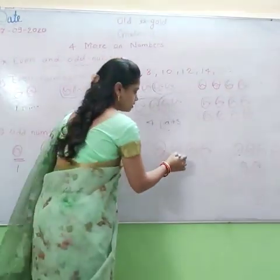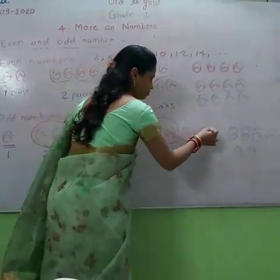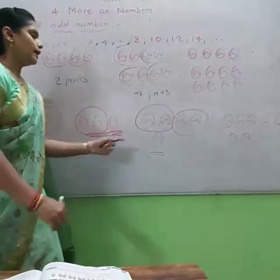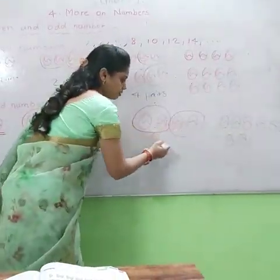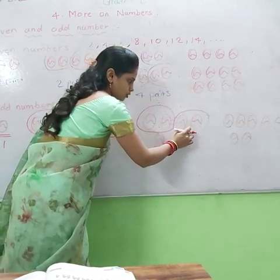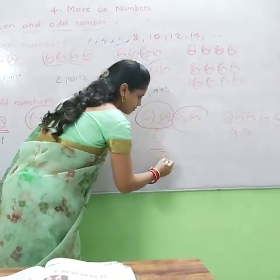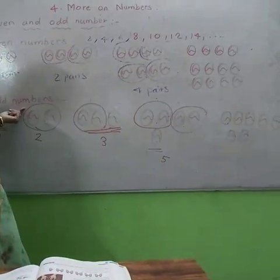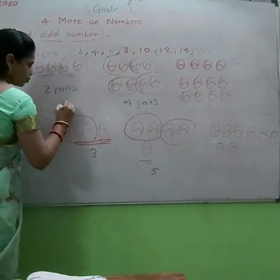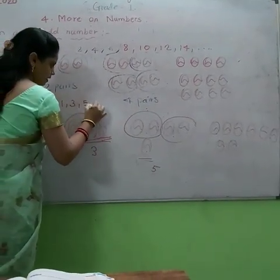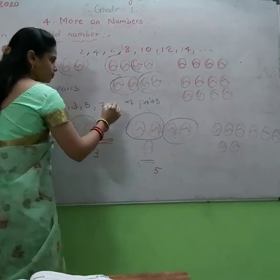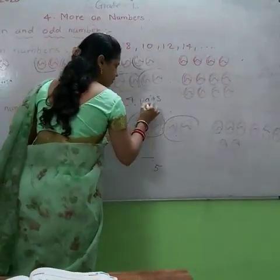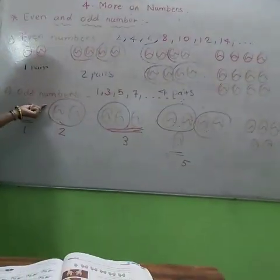Here, make pairs: 1 pair, 2 pairs, and 1 ball is left over. So 1 pair, 2 pairs and 1 ball — that is 2, 2, 4 and this one makes 5. Means 5 is an odd number. See: 1, 3, 5, 7 — these numbers are odd numbers. Is it clear?